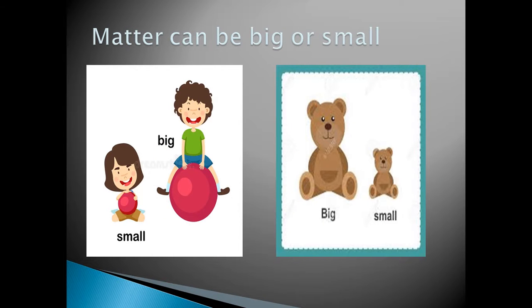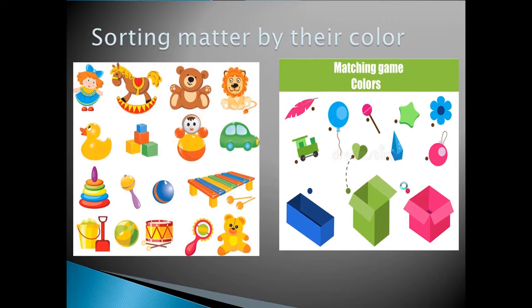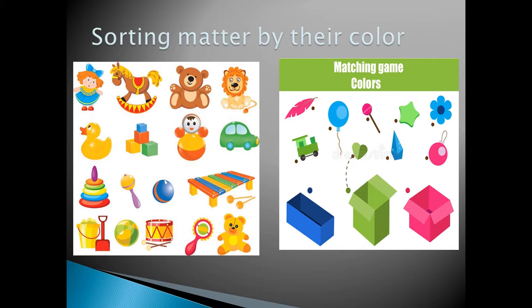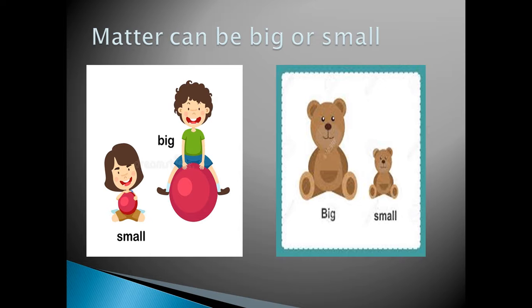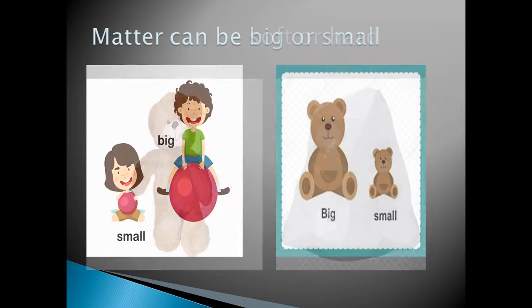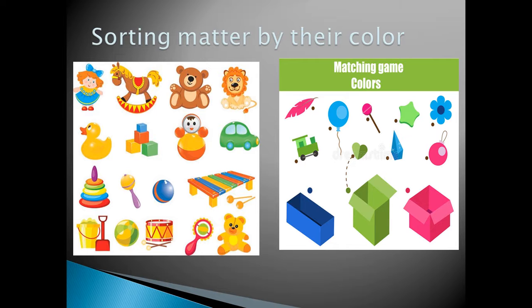We can also classify matter if it's big or small. This ball is small, but this ball is big. Also, this is a big bear and this is a small bear. We can also sort matter by their color. So we can classify matter as big or small, soft or hard, or by their different colors. Matter is everything around us.